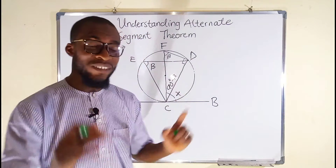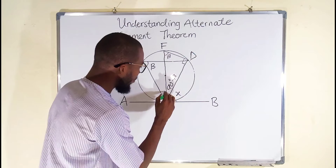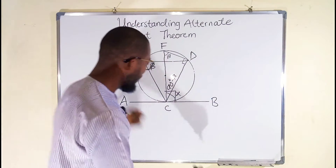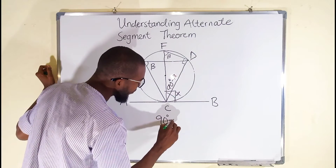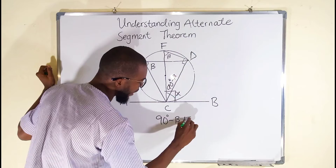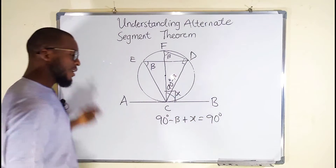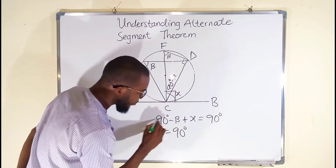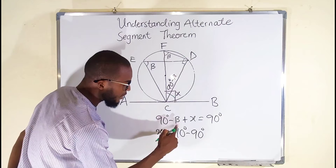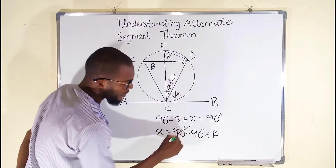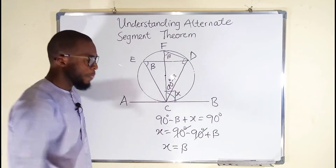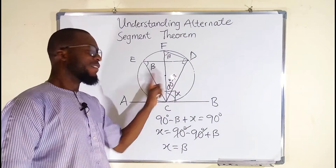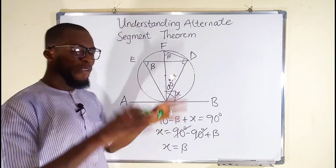Remember that a radius and a tangent form a right angle, therefore this angle right here is 90 degrees. If you add x and (90 minus beta) you shall obtain 90 degrees. So: (90 degrees minus beta) plus x equals 90 degrees. Leaving only x on the left: x equals 90 minus 90, and since negative beta crosses over it becomes positive beta. Therefore x equals beta. This shows that the angle subtended by the chord and the tangent is equal to beta, which is exactly equal to the inscribed angle — and hence proved.